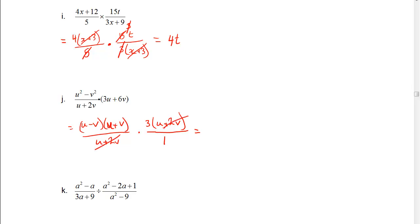So u plus 2v and u plus 2v can cancel. We can put that in brackets to show that it's a factor. Then we end up with 3 times u minus v and u plus v. We'll leave it in factored form.